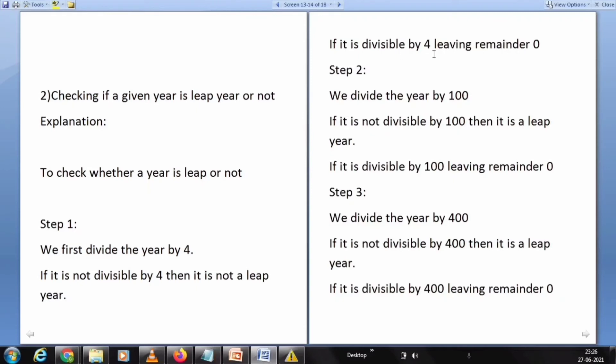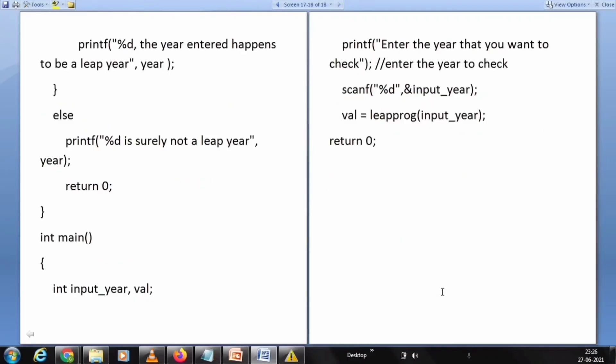If it is divisible by 4 leaving remainder 0, then we need to go for the second step. We divide the year by 100. If it is not divisible by 100, then it is a leap year. If it is not divisible by 100 leaving remainder 0, then we need to go for the third step. We divide the year by 400. If it is divisible by 400, then it is a leap year. If it is not divisible by 400 leaving remainder 0, then it is not a leap year.